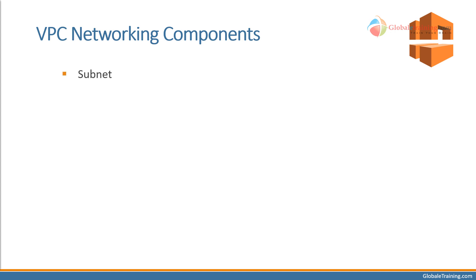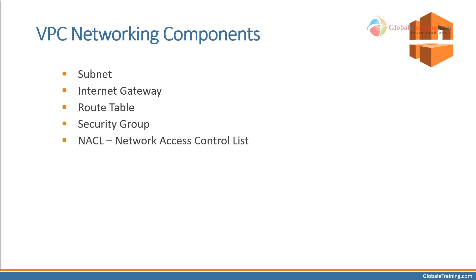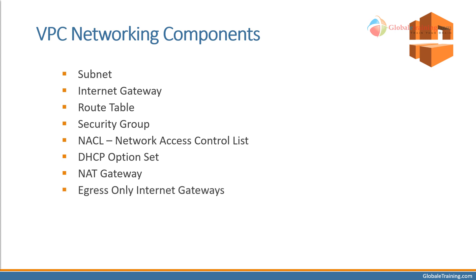We have subnets, we have internet gateway, route table, security group, NACL, DHCP option set, NAT gateway, egress-only network gateways, elastic IP addresses, VPC endpoints, and VPC peering.